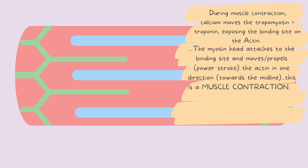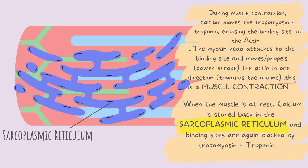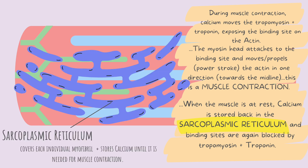This causes a shortening and thickening of the sarcomere. This is a muscle contraction — when the sarcomere is short and thick. When the muscle is at rest, the calcium makes its way back into the sarcoplasmic reticulum and the binding sites are again blocked. This is the resting phase of a muscle. All you need to know about the sarcoplasmic reticulum is that it covers each myofibril and it stores calcium.